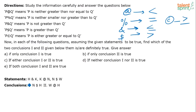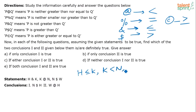Now let us look at the first statement. H & K — so once you have written the symbol decoding down, writing these in terms of inequalities becomes very easy. H & K means H less than or equal to K, K less than or equal to N, N greater than W. So that's what is given. The conclusions given are: first, N $ H — meaning N greater than H; second, W less than H.